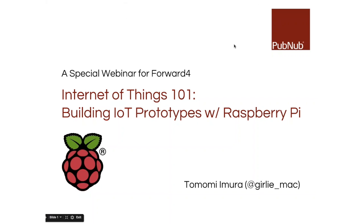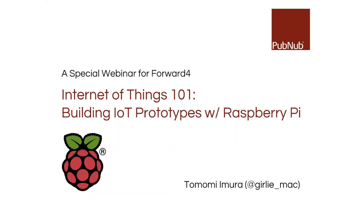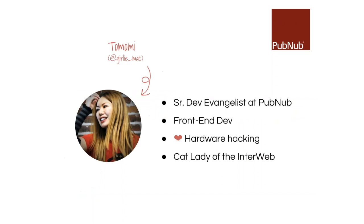Hello — good morning if you're in the west coast, good afternoon or good evening elsewhere, but please don't go to sleep. Today I'm going to talk about how to build IoT or smart device prototypes using Raspberry Pi. My name is Tomomi, you might know me as girly_mac on social media — my Twitter handle is @girly_underscore_mac — and I'm a Senior Developer Evangelist at a company called PubNub in San Francisco.